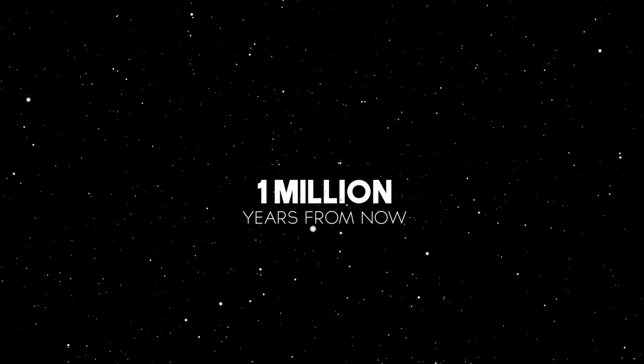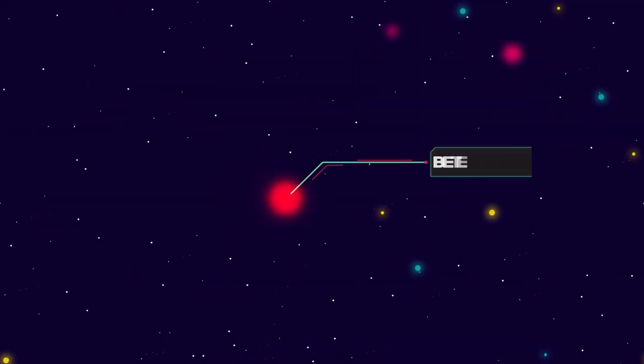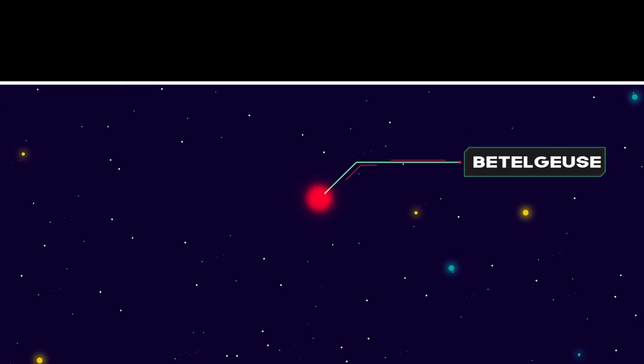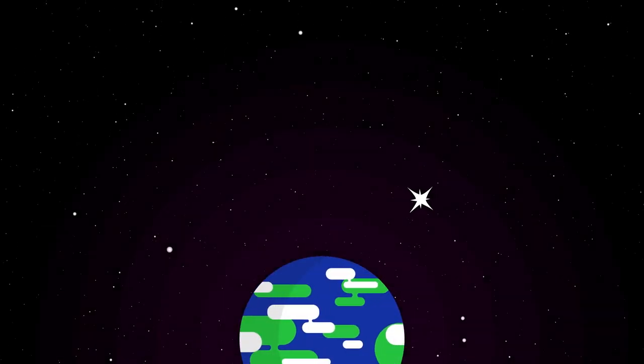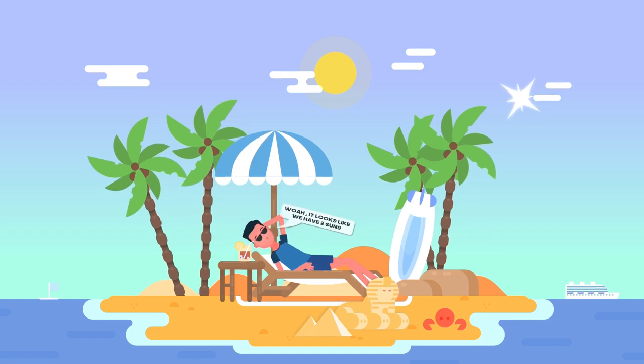One million years from now, the nearby red star Betelgeuse, the brightest one in our night sky, will run out of fuel and collapse under its own mass, creating a spectacular supernova visible from Earth even during daytime.